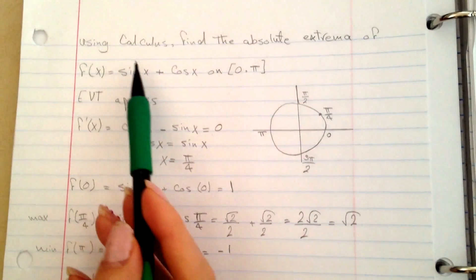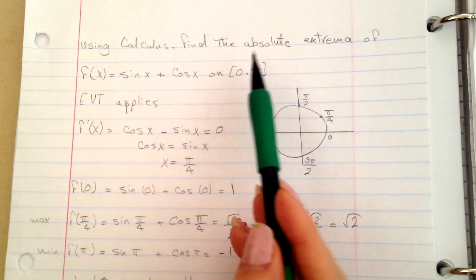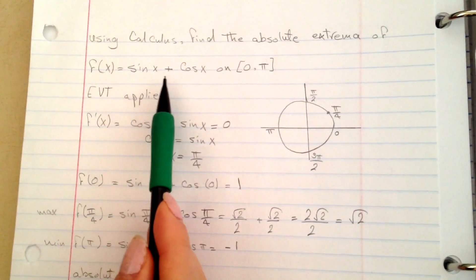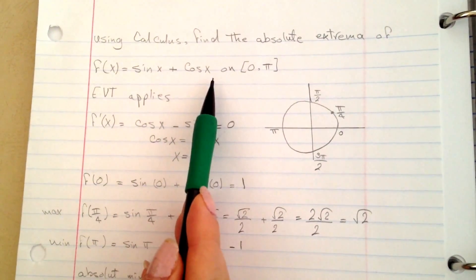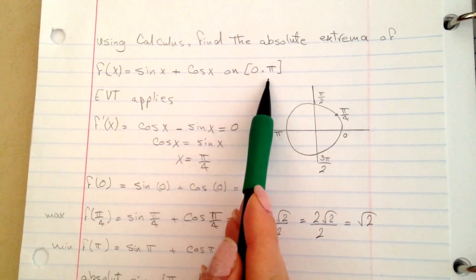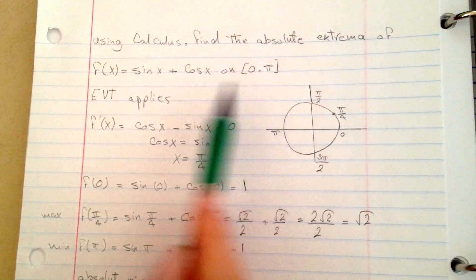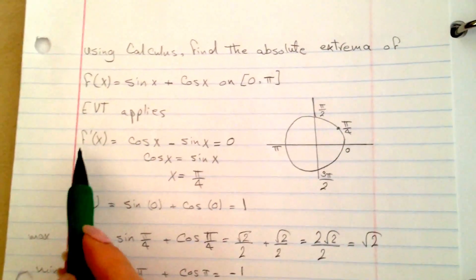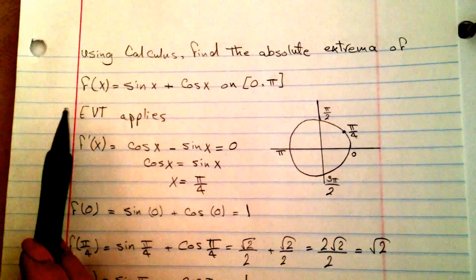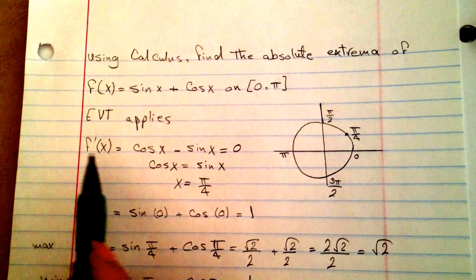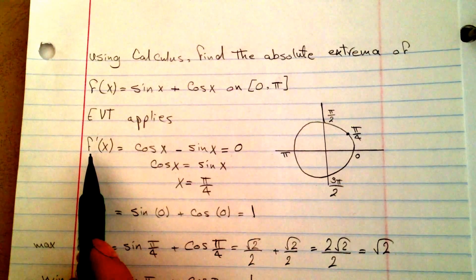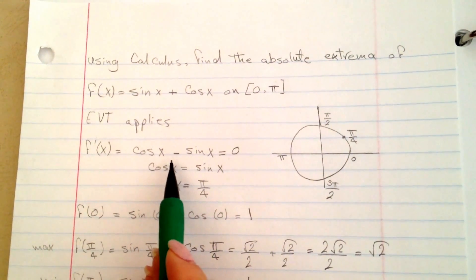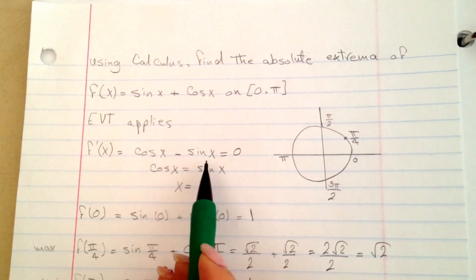The question is, using calculus, find the absolute extrema of f of x equals sine of x plus cosine of x between 0 and pi. The Extreme Value Theorem applies. First, we're going to find the derivative of f of x. So we have f prime of x equals cosine x minus sine of x.